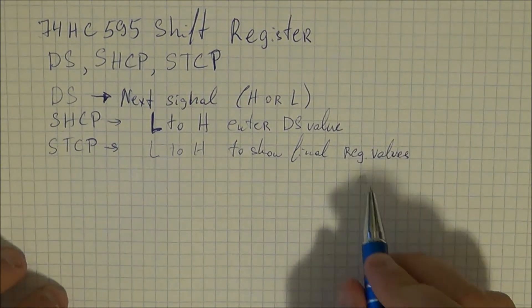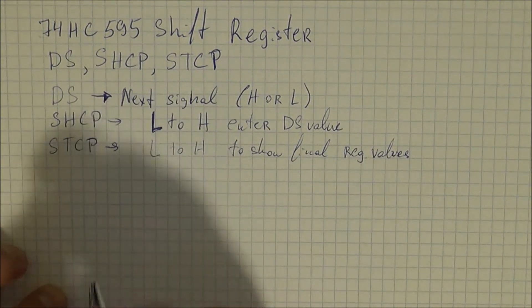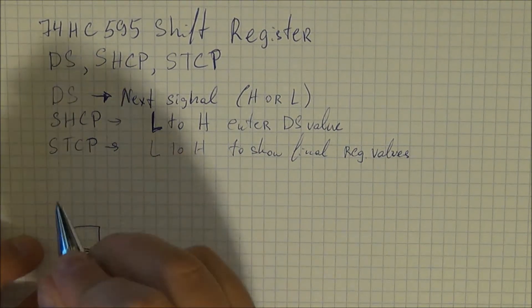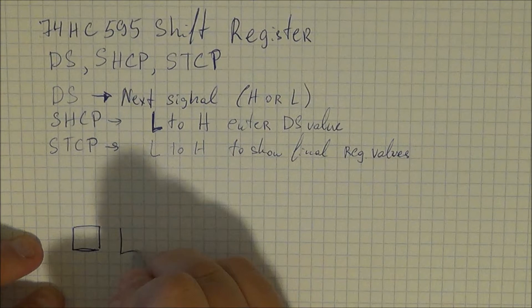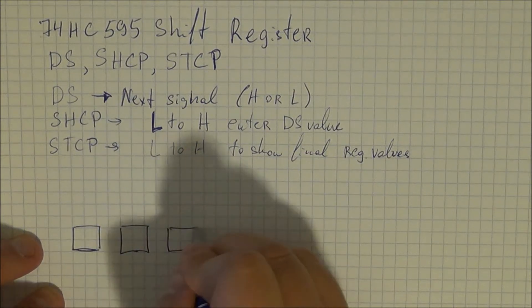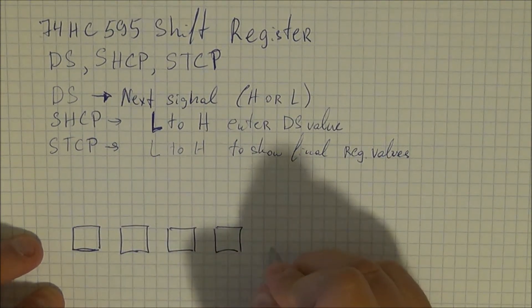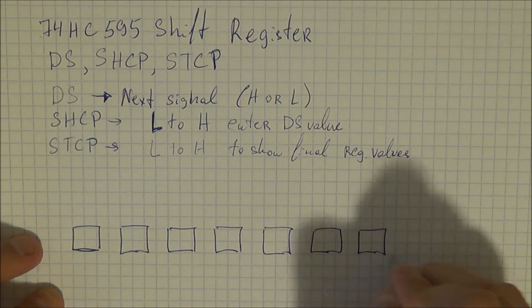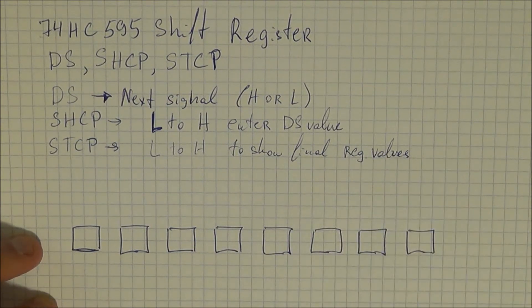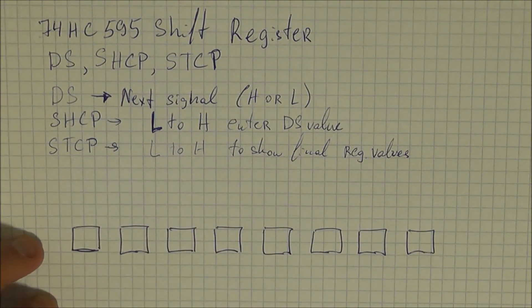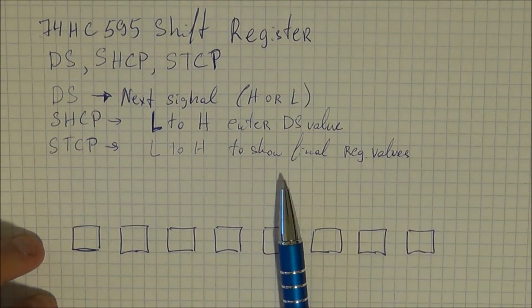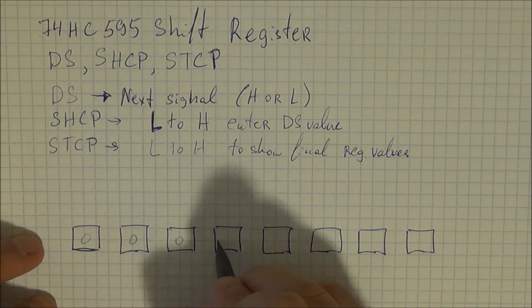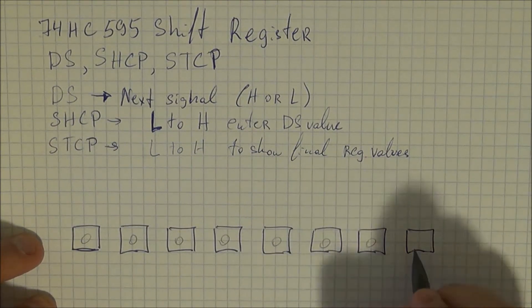So this is again low to high to show final register values. Now what I mean by those registers. So as I've mentioned there's eight of them in this particular shift register so imagine them as being as blocks. So at the beginning they are all zero or low.